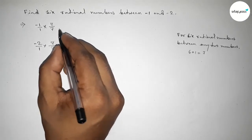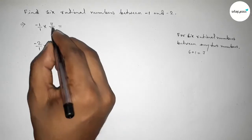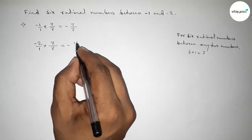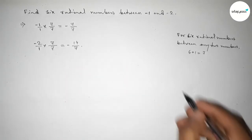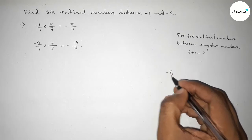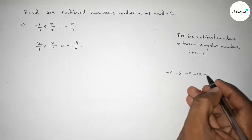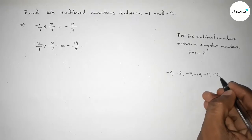With both numbers by this way, so here 7 over 7, then here also multiplying by 7. By this way, so here equal to minus 7 over 7 and here minus 14 over 7. Now between minus 7 to minus 14, we can get six negative integers.